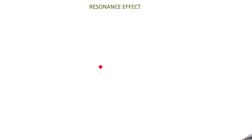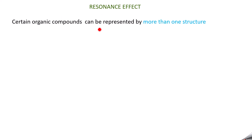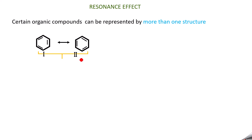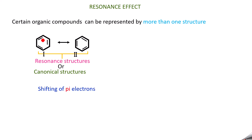So what is resonance effect? Certain organic compounds can be represented by more than one structure. For example, if you take benzene you can write more than one form. These two structures are called resonance structures or canonical structures, and they can be obtained by shifting of pi electrons. By shifting this pi electron you get one bond, shift another and you get the next bond, and so on — giving you another structure.